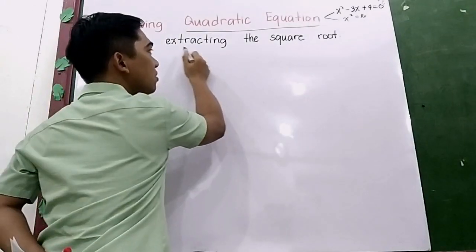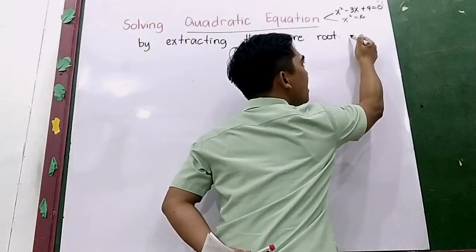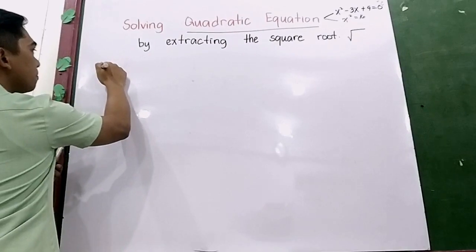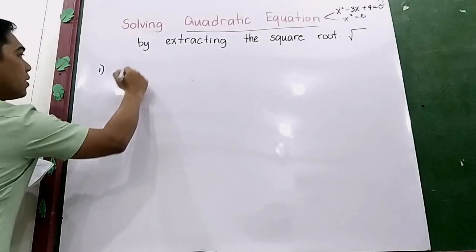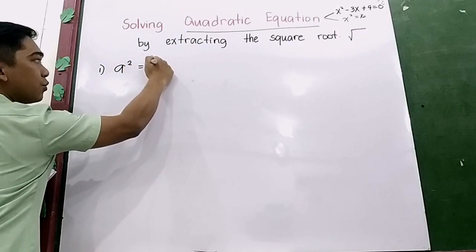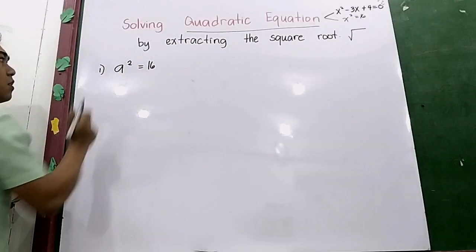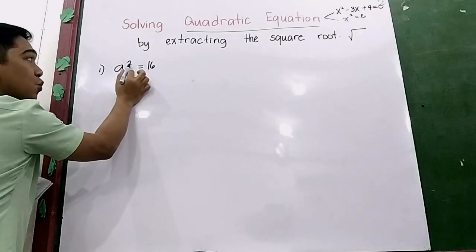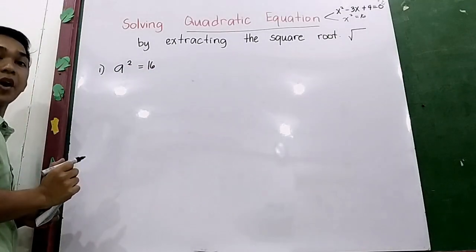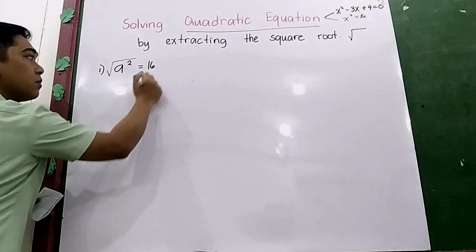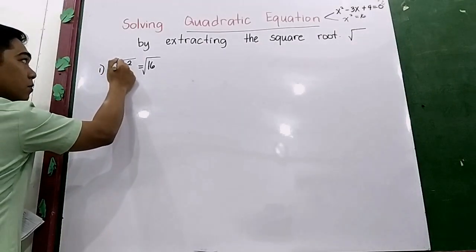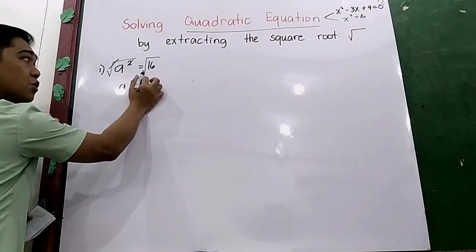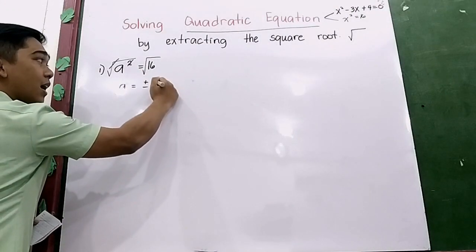We will use the square root sign. Let's try number 1: x squared is equal to 16. We are going to find the value of the variable. To remove the square, we need to extract the square root from both sides. The square cancels out, so x is equal to plus or minus the square root of 16, which gives us plus or minus 4.